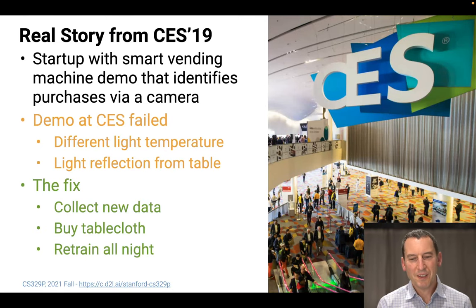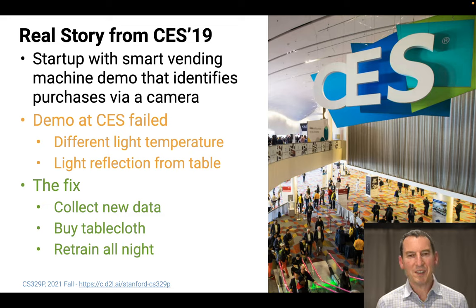So here's another real story. And the reason why I'm telling you all of this is because this is probably one of the most common pitfalls that you'll run into if you go and deploy your system. Some startup wanted to actually show off a smart vending machine demo that identifies purchases with a camera. So this was after Amazon Go launched, and a couple of startups wanted to show that they had something like this, such that other stores could also roll out an Amazon Go-like feature. Alas, it's not quite that easy. And so they built the stuff that worked well at home, and then they wanted to demo it at CES.